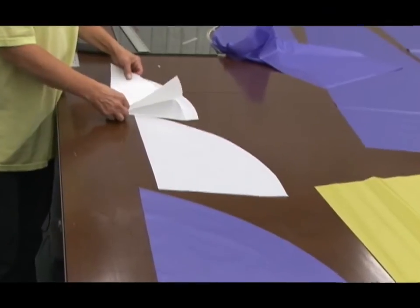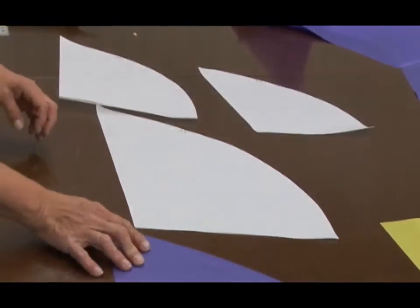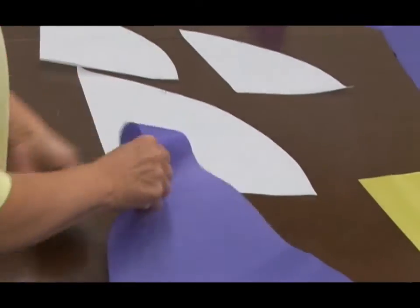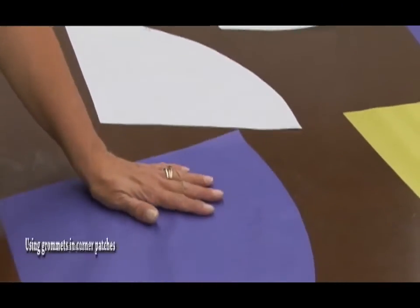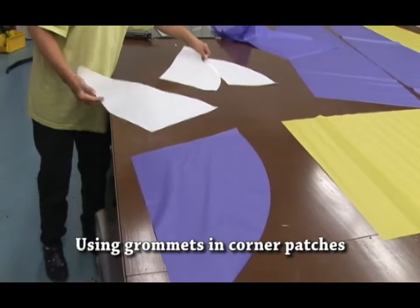Depending on your sail size, you may be able to use spur grommets. Our instructions will indicate which one to use. If you're going to be using webbing and D-rings, then you need to skip ahead to the third video. That will show you how to do the corner assemblies for that assembly.